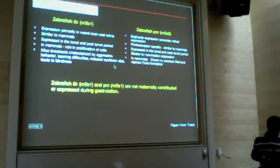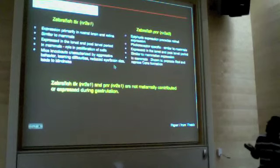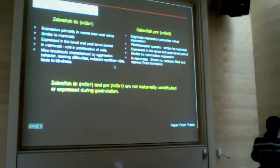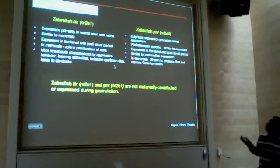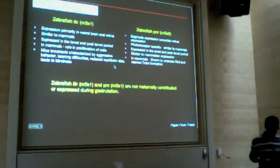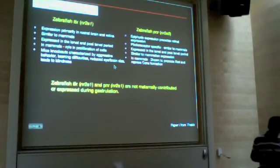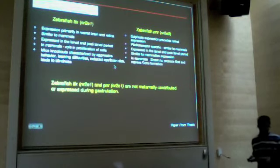TLX and PNR are quite well characterized. TLX knockouts show aggressive behavior, learning difficulties, reduced eye and brain size, and are blind. PNR is also well characterized — it has been shown to promote rod photoreceptor formation and repress cone formation, and it has also been linked to cone-rod dystrophy. Both of these genes are not maternally contributed, nor are they expressed during gastrulation.